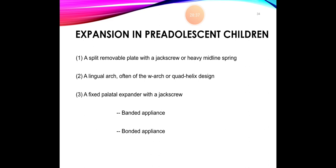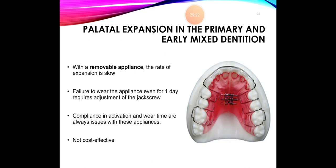Additional indications for early expansion include reducing the possibility of mandibular skeletal asymmetry. In pre-adolescent children, less force is needed to open the suture because it is relatively easy to obtain palatal expansion. Therefore expansion may be obtained by a split removable plate with a jack screw, a lingual arch such as the W-arch or quad helix, or a fixed expander with a jack screw such as the Hyrax — which we classify as banded or bonded. All three appliances can be used for expansion in pre-adolescent children.